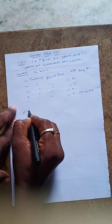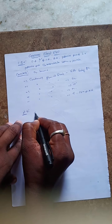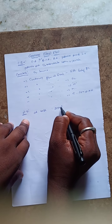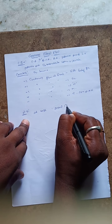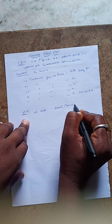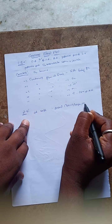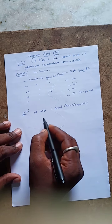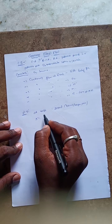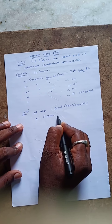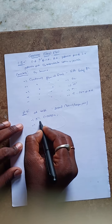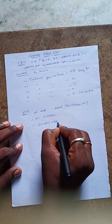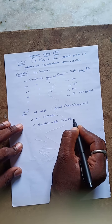The normal value of coronary blood flow at rest is 250 ml, or 70 ml per 100 grams per minute. This represents five percent of the cardiac output. During exercise, this increases three to six folds.